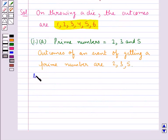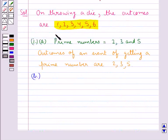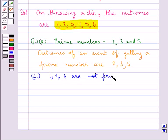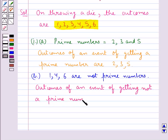Now let's see Part B, where we have to list the outcomes of an event of getting not a prime number. So of these 6 numbers — 1, 2, 3, 4, 5, and 6 — the numbers that are not prime numbers are 1, 4, and 6. So the outcomes of an event of getting not a prime number are 1, 4, and 6.